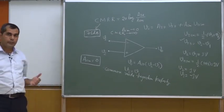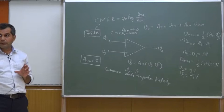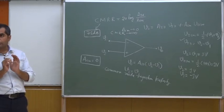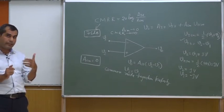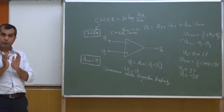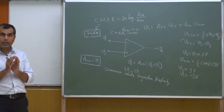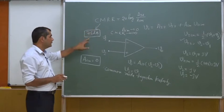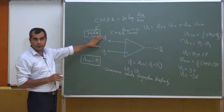High CMRR means the differential amplifier amplifies the difference of the two input signals but rejects the common part. The operational amplifier is built using a differential amplifier, so it must sense only the difference of the two inputs — whatever is common in the two inputs should be rejected. Ideally CMRR should be infinity; in practical cases we get around 75 dB for the IC741.